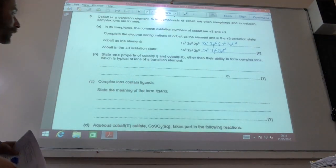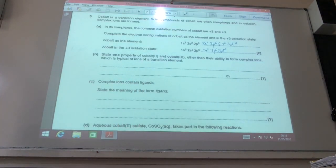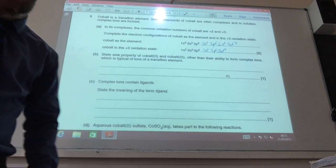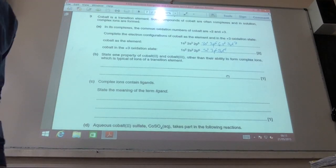Different properties include colored compounds, also catalysts. What's the meaning of the term ligand? It donates an electron pair to the metal ion.